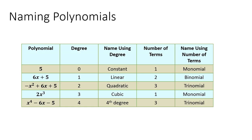Last, we're going to look at how to name polynomials. You can name them by degree or by number of terms. The polynomial 5 has degree 0, which is called a constant, and since it has one term it's called a monomial. Next, 6x plus 5 has degree 1 — polynomials with degree 1 are called linear — and since it has two terms it's called a binomial.